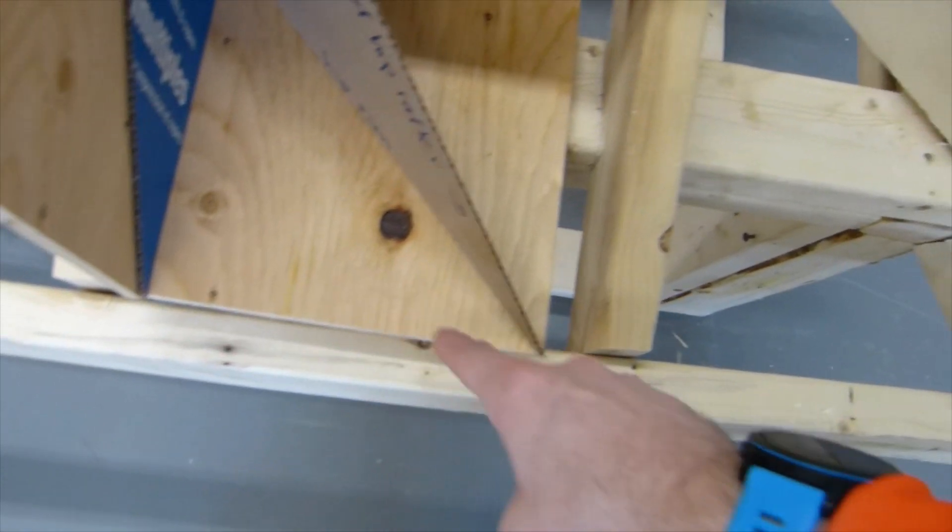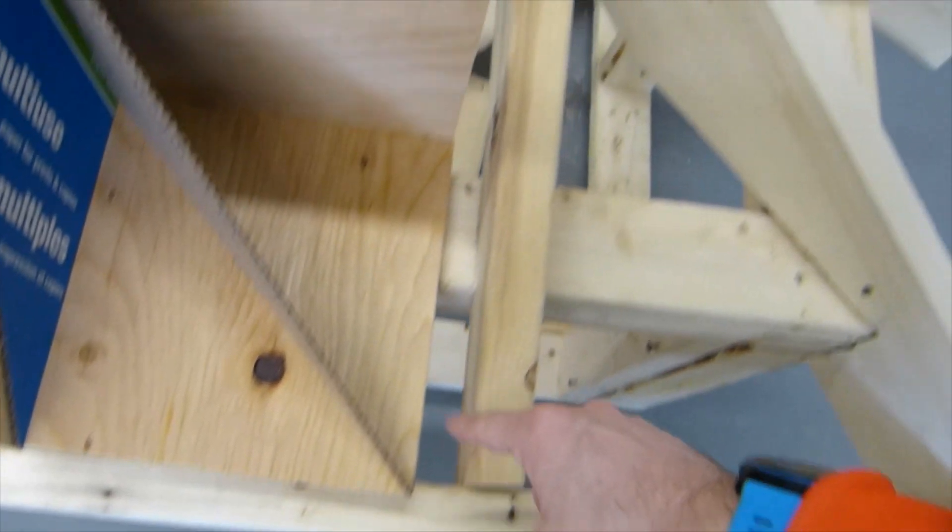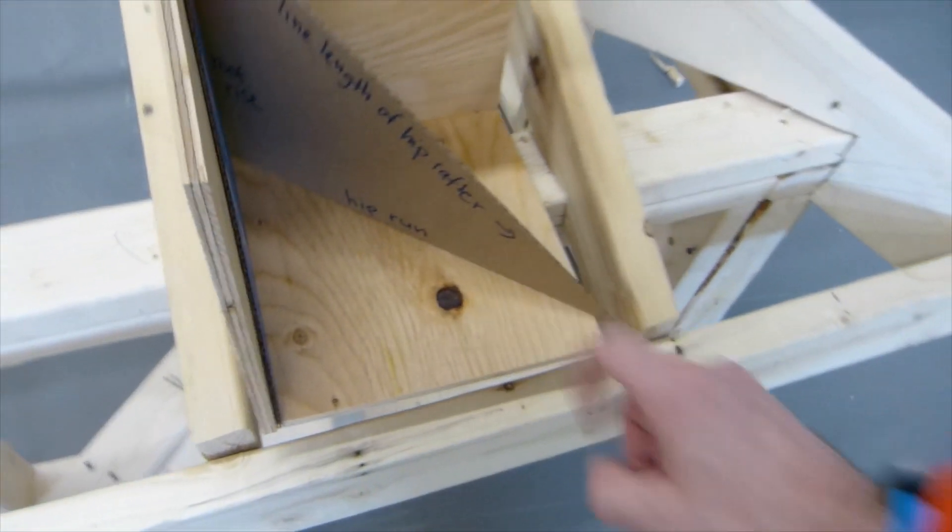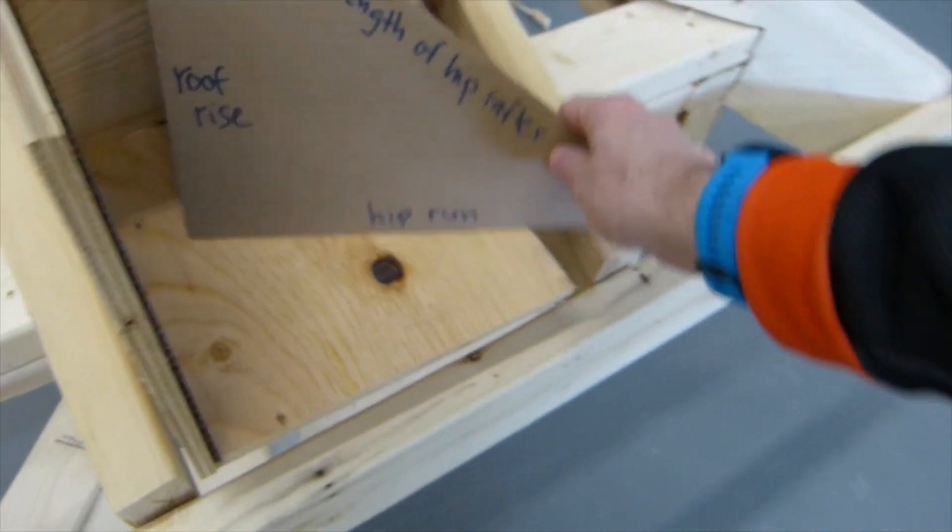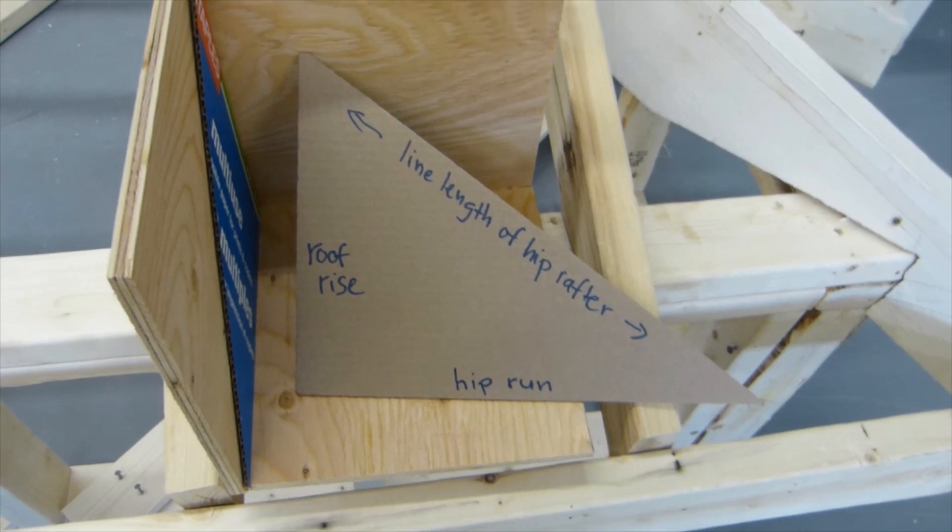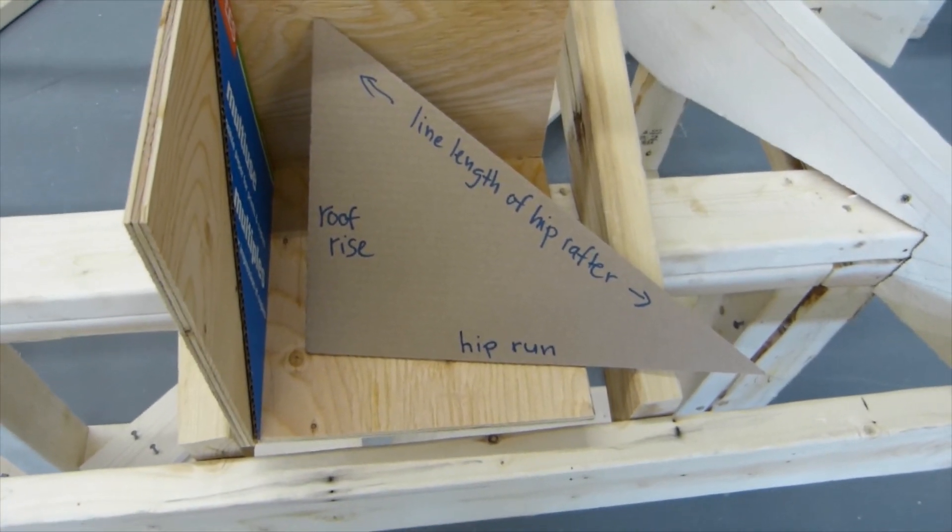Then, if the side is 1, and that side is the same 1, then the run of the rafter is square root 2. The hip run is square root 2 of the common rafters run. So that's how it can be visualized.